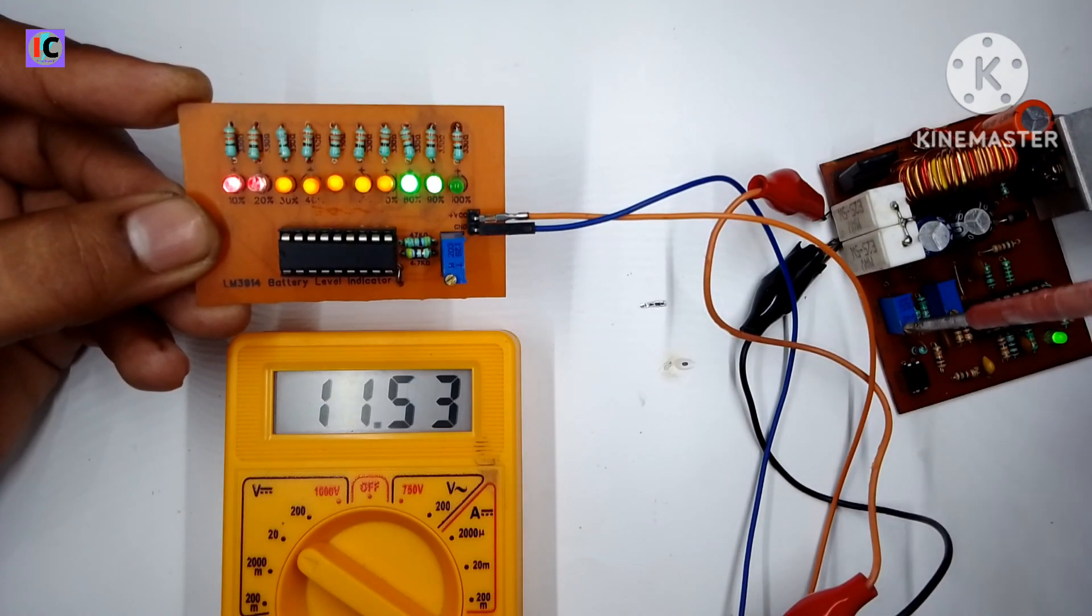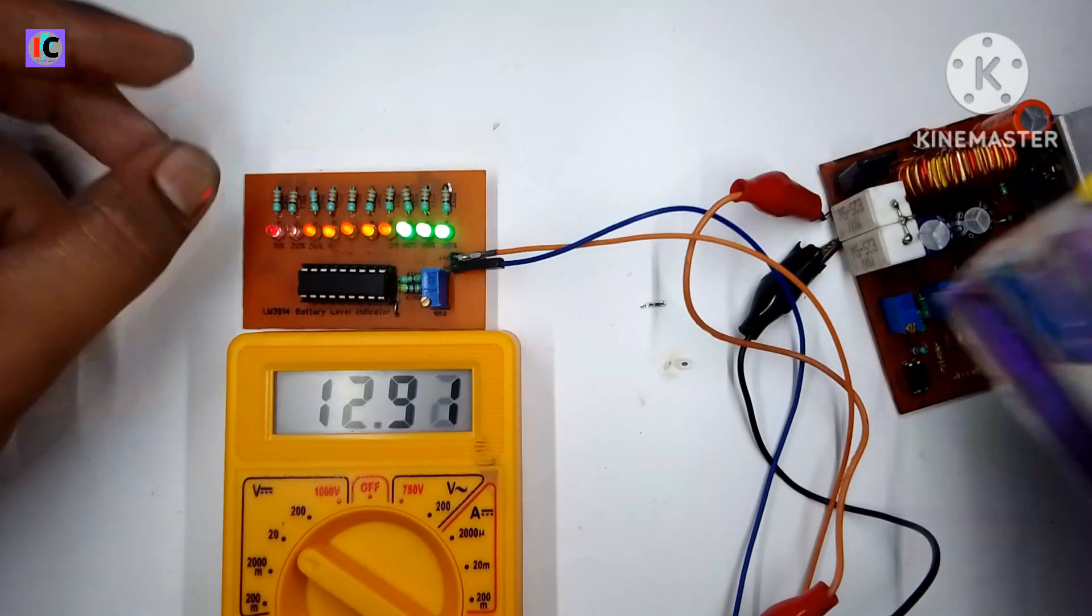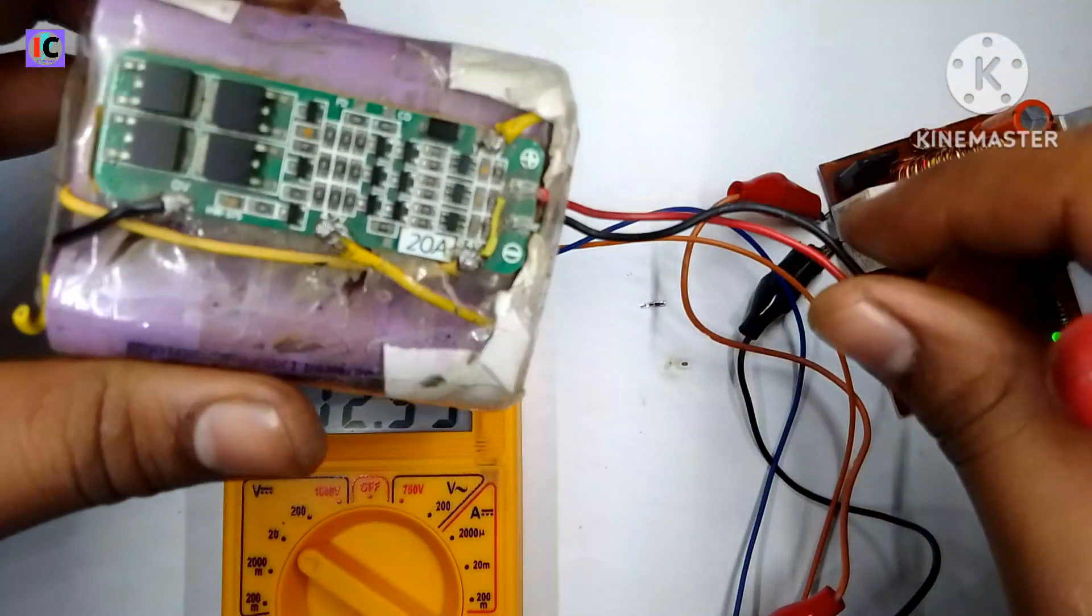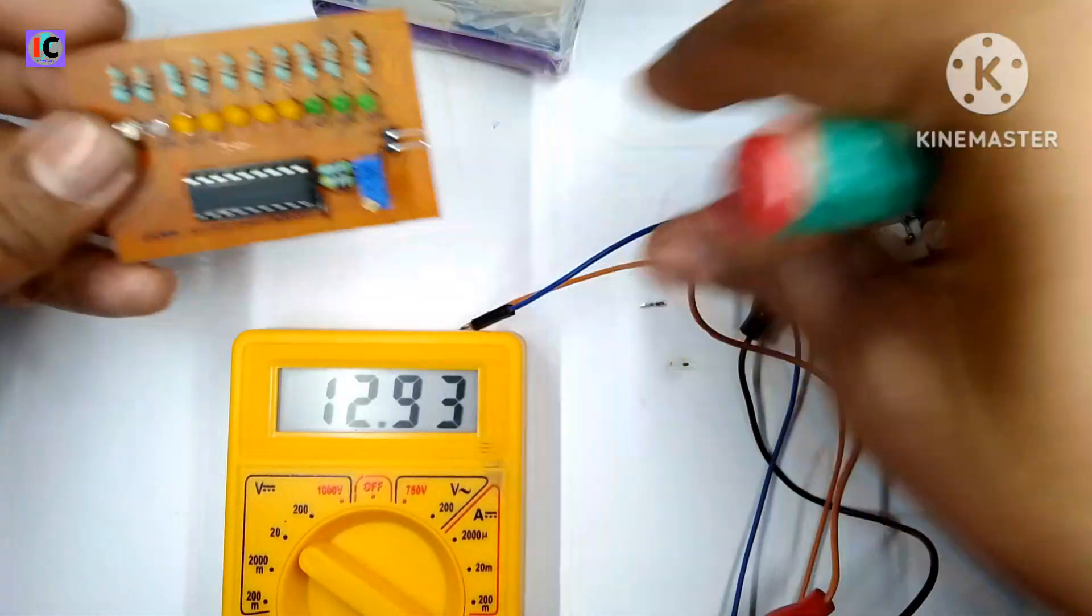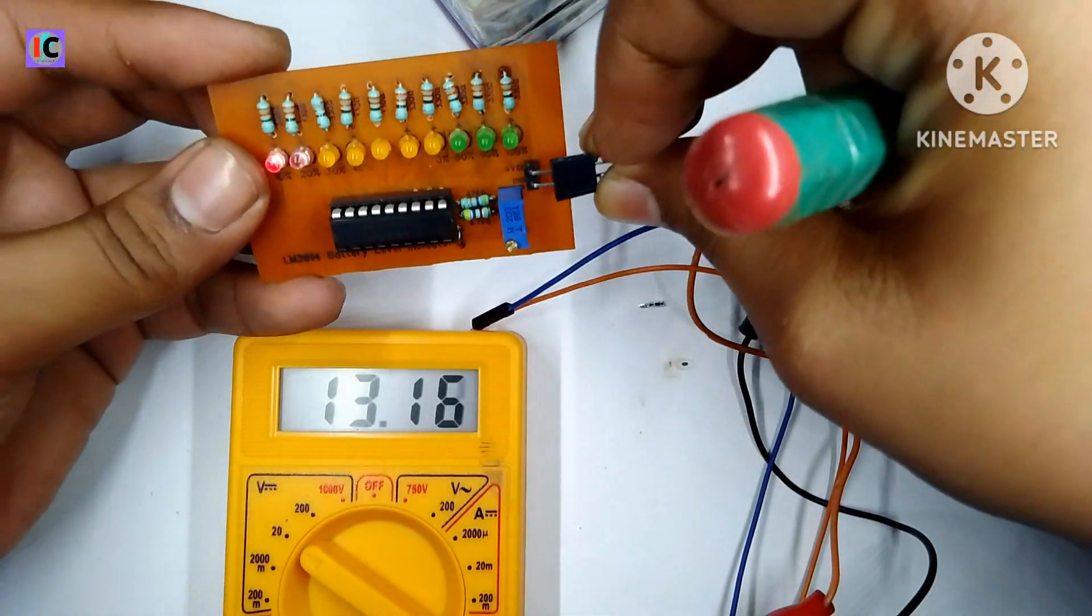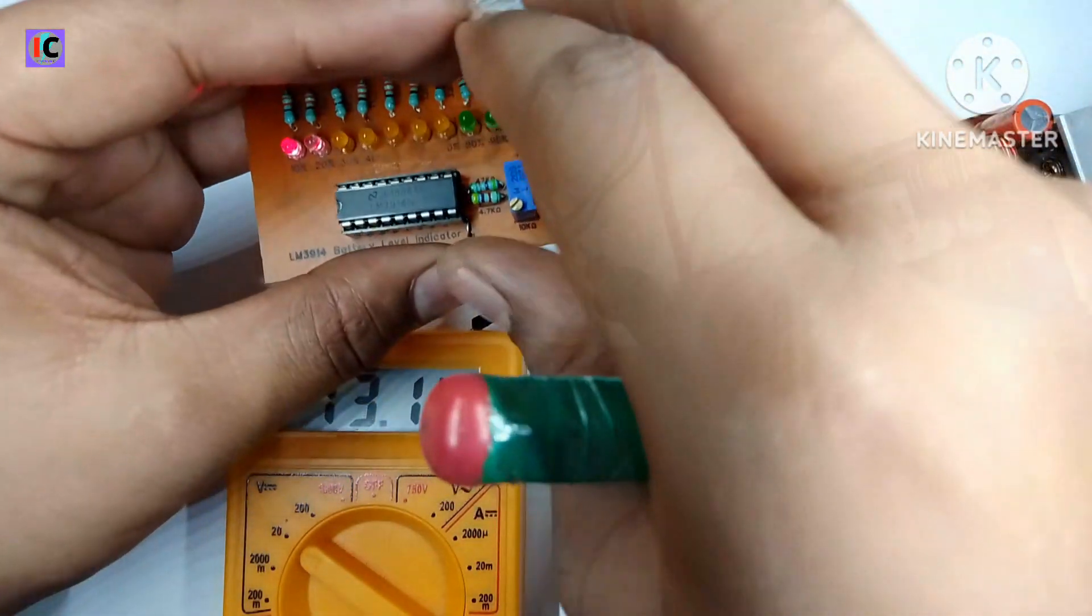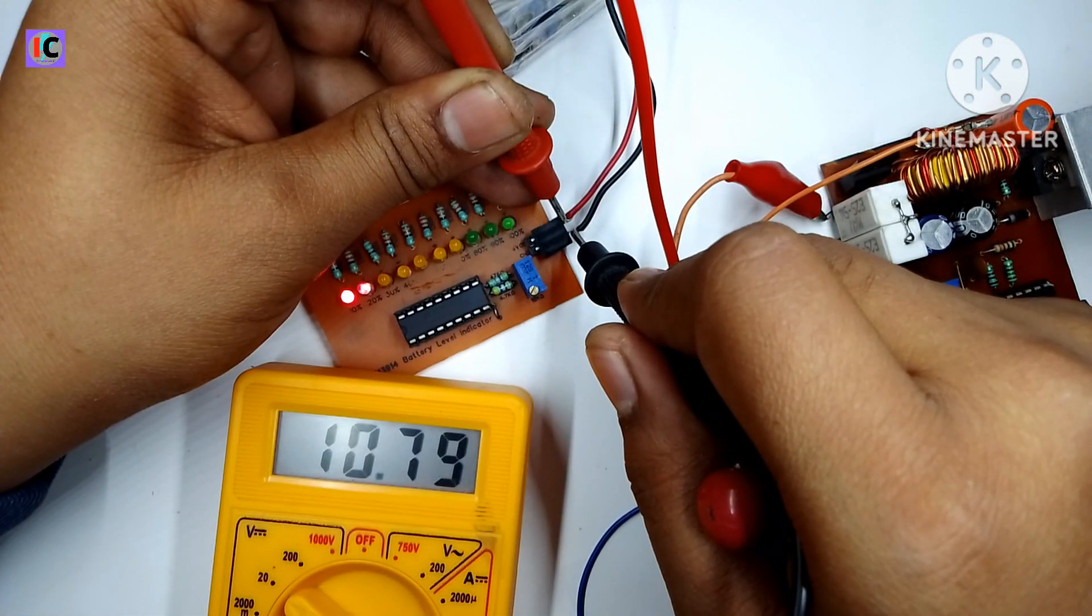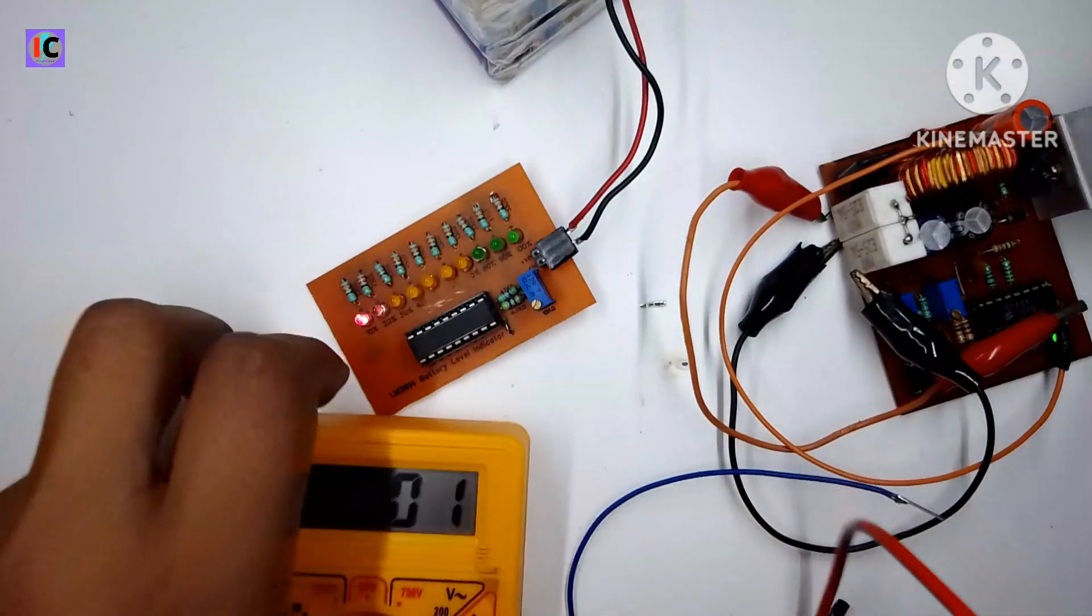The voltage level indicator with a 12.7 volt battery is working very well compared to professional ones in the market. Here I am testing the voltage of this battery pack, and it's indicating 20 percent, which is almost 10.8 volts, which is very correct.